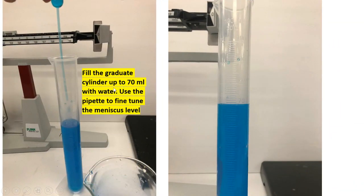Fill the graduated cylinder up to 70 ml with water and use the pipette to fine tune to the meniscus level. So here we have our initial volume 70 ml.